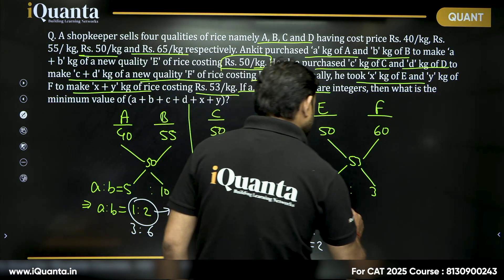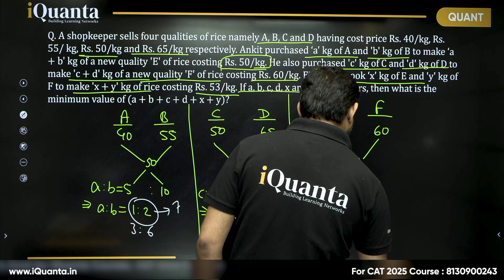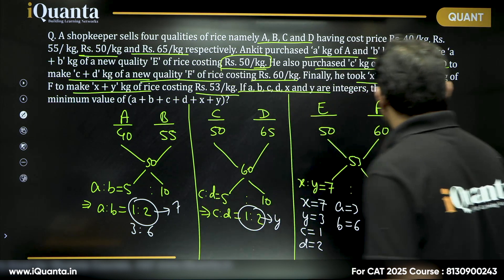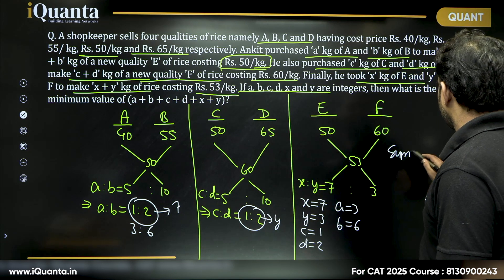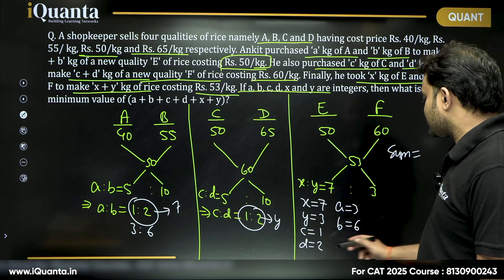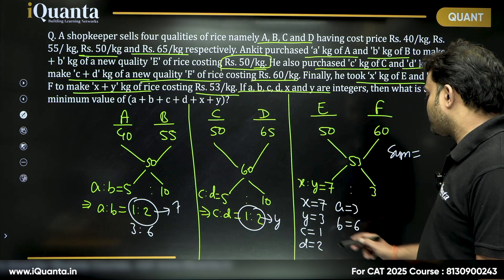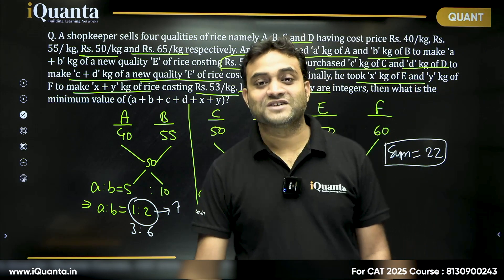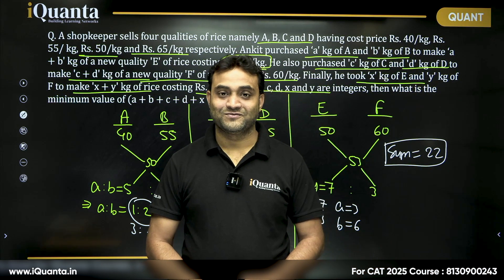So, what we can say? Minimum value of A will be equal to 3. Minimum value of B will be equal to 6. So, what will be the sum? The sum that we are looking for: 6 plus 3 is 9 plus 3, 12 plus 10. The sum is 22. That is what we are looking for. Thank you.